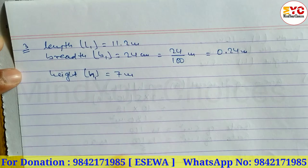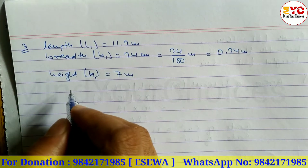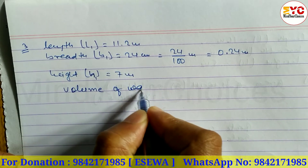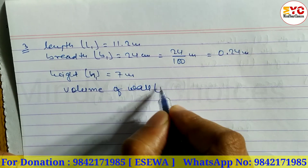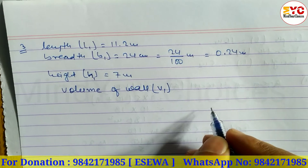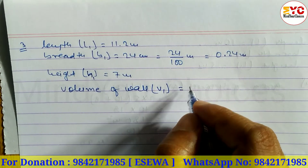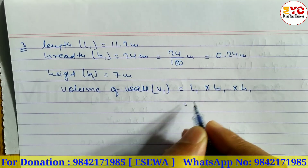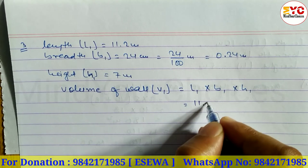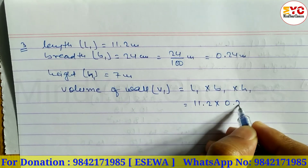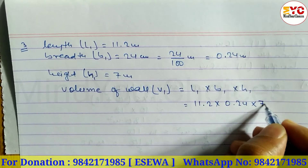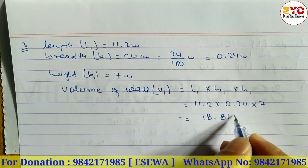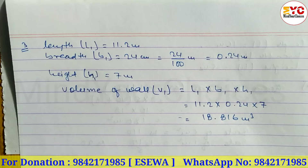Now we find the volume of the wall. The formula for volume is length × breadth × height. So volume of wall V1 equals L1 × B1 × H1, which is 11.2 × 0.24 × 7. This gives us 18.816 cubic meters.